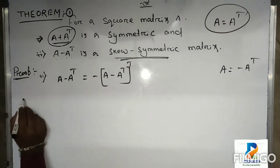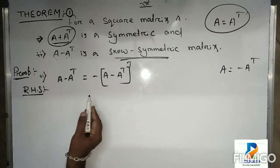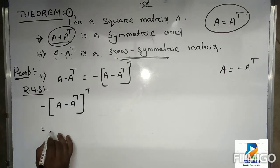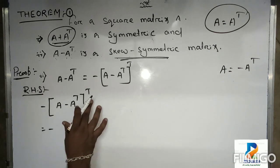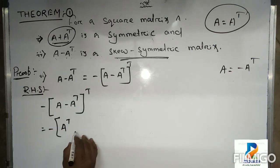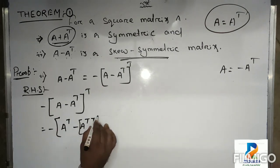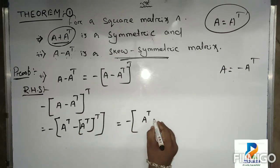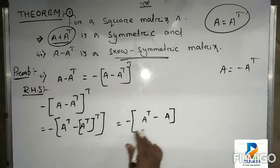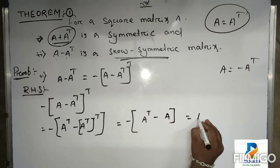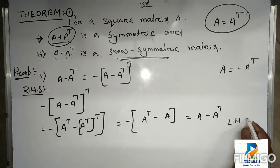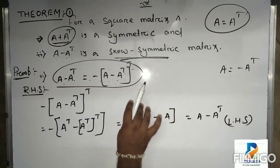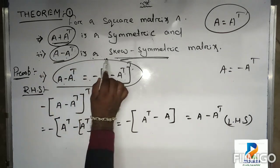Taking the RHS: minus of A minus A transpose whole transpose. Using A minus B whole transpose equals A transpose minus B transpose, this becomes minus of A transpose minus A transpose whole transpose, which equals minus of A transpose minus A. That simplifies to A minus A transpose, which is our LHS. Therefore A minus A transpose is a skew symmetric matrix. Proof complete.